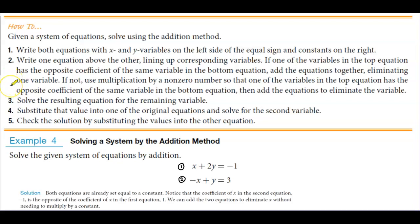If not, then we're going to use multiplication by a non-zero number so that one of the variables in the top equation has the opposite coefficient of the same variable in the bottom equation. Then add the equations to eliminate the variable.